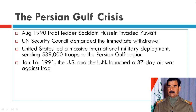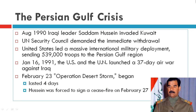In January of 1991, the US and the UN launched a 37-day air war against Iraq. The following month, Operation Desert Storm — the ground war — lasted four days, and Hussein was forced to sign a ceasefire on February 27th.